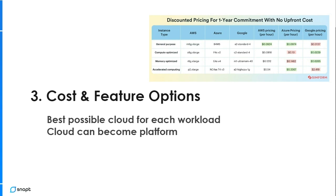We have a client, for example, that spends $5 to $6 million a month on cloud, and they will move their workloads between the big three clouds multiple times a day depending on the rates they get, their spot pricing, or instance requirements. That's obviously an extreme example, but there's no reason you shouldn't be able to benefit from that. If you have an entirely containerized workload where you can deploy it anywhere, there's no reason not to just run more containers where it's cheaper.